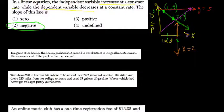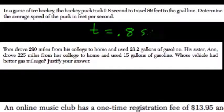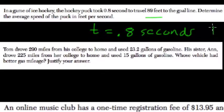Okay, this next one is hard to read. I'll read it for you. In a game of ice hockey, the hockey puck took 0.8 seconds, so T equals 0.8 seconds. You travel 89 feet, so distance is 89 feet.